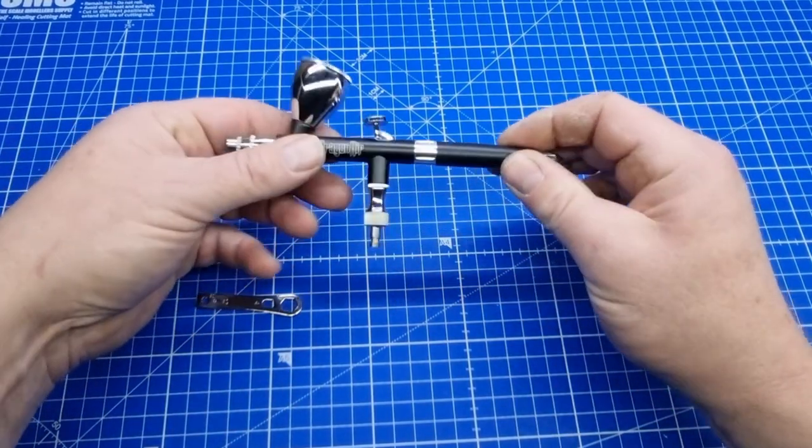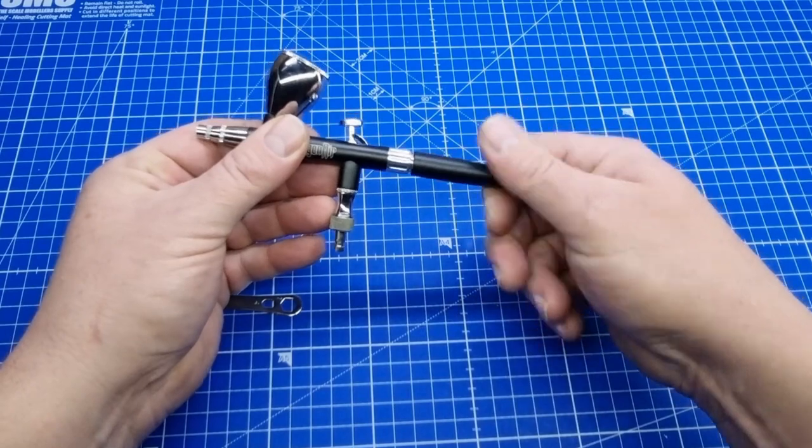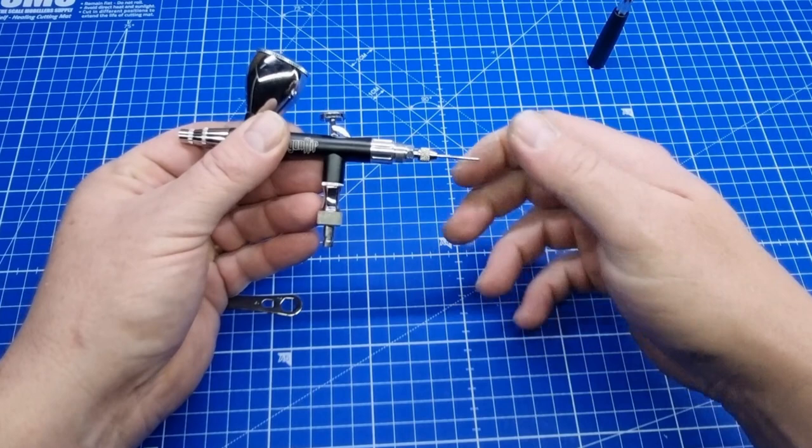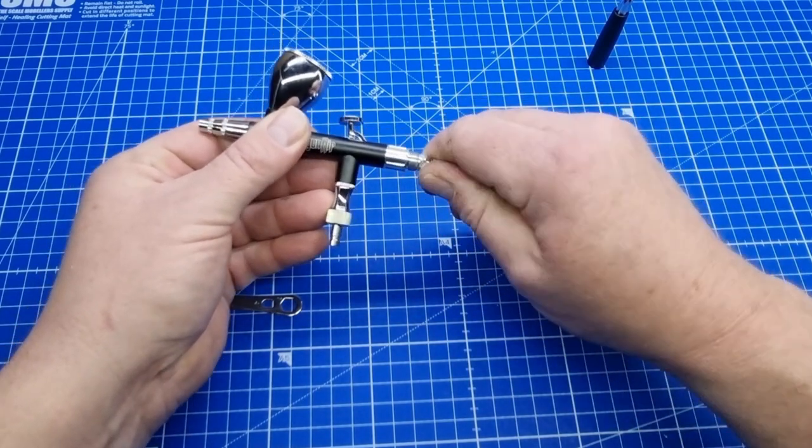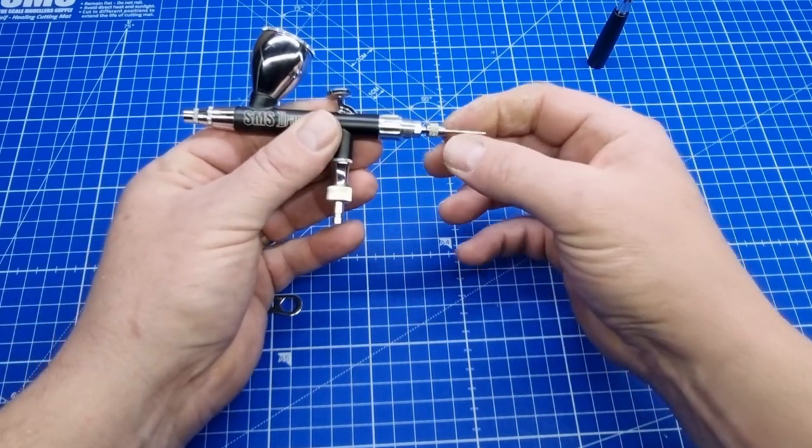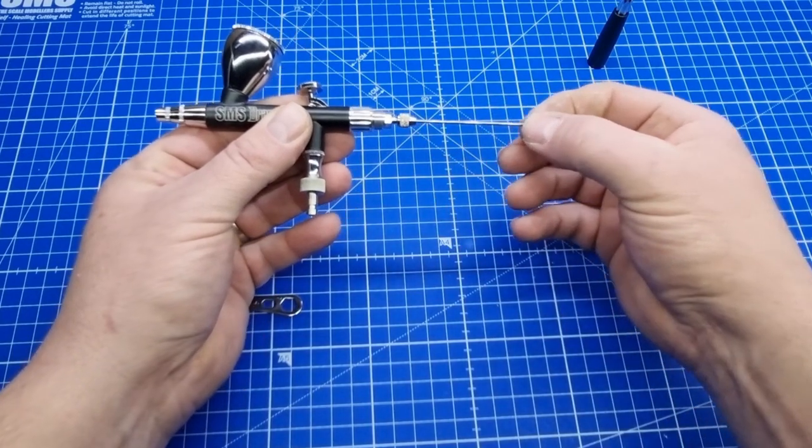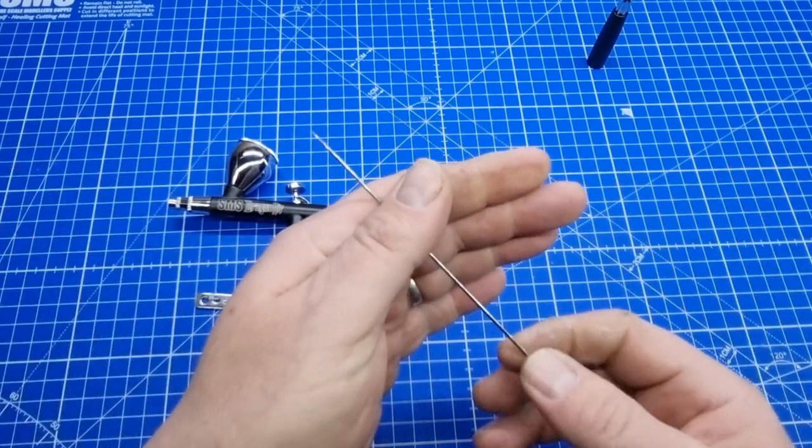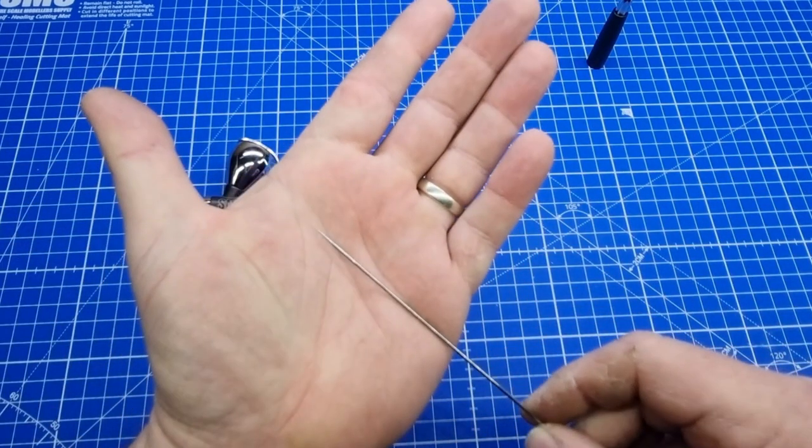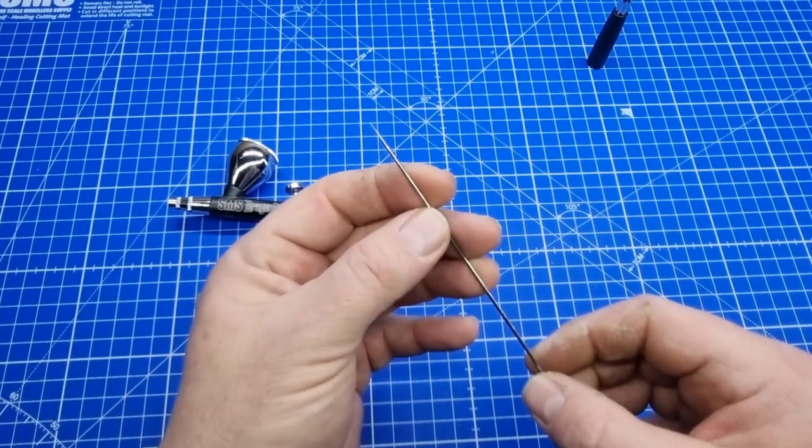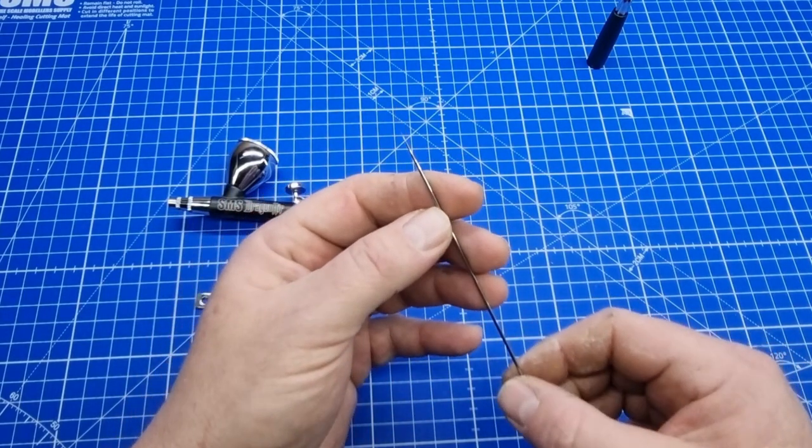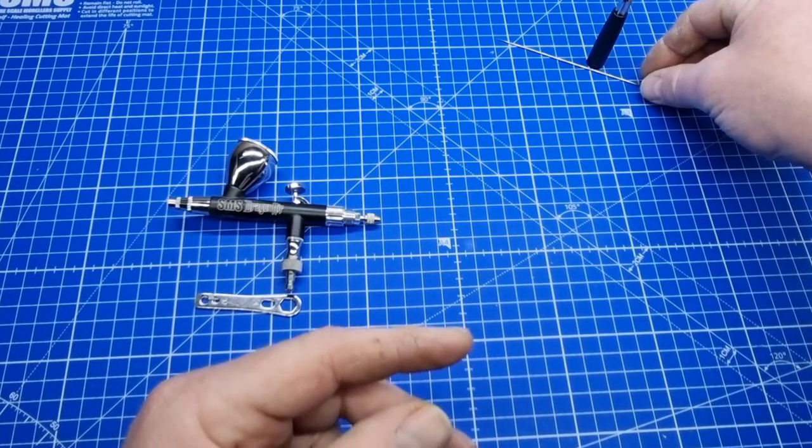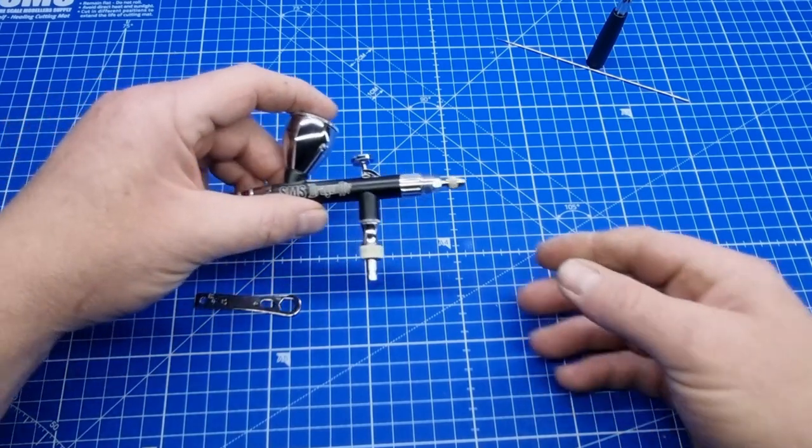The first step we're going to do is take the rear section off here and pull out the needle. Normally this part doesn't need to be cleaned, so we can put that aside. Release the collet there just a little bit, and then gently pull out your needle all the way. As you should know, needles are very, very fragile. Be careful not to bend that tip. If you do, you need to either sharpen it or replace it with a new needle.